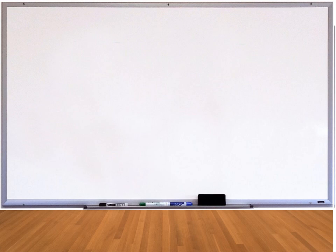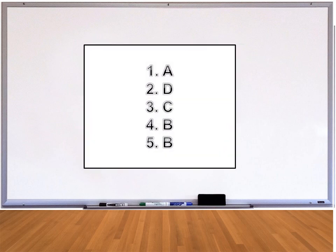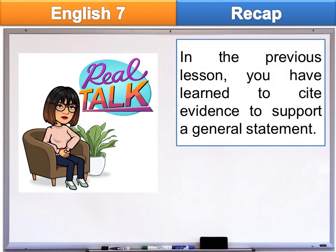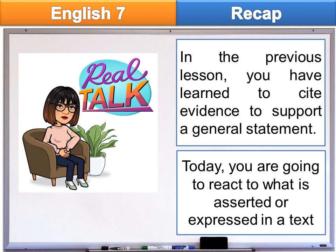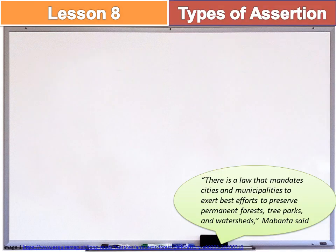Let's reveal the answers now for the pretest. In the previous lesson, you have learned to cite evidence to support a general statement. Today, you are going to react to what is asserted or expressed in a text. Get yourself ready to focus — yawn and shrug your shoulders. Let's look at the picture and read the article presented.